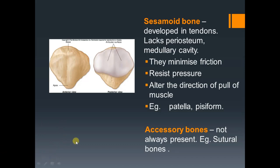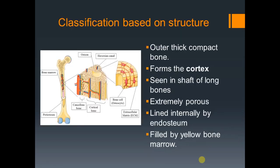The next type is accessory bones, mainly sutural bones — also called Wormian bones because they are present in the form of a worm-like pattern. Wormian or sutural bones are present between the sutures of the skull and there is no definite number to confirm the presence of these accessory bones.